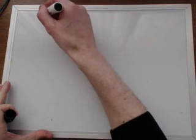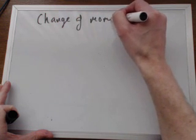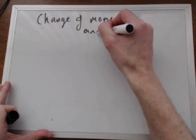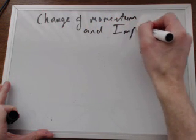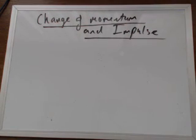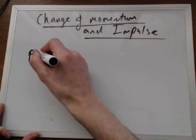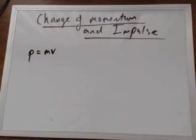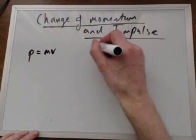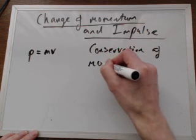Hello. In this video, we will look at change of momentum and impulse. First of all, let's talk about momentum. The symbol for momentum is p, and momentum equals mass times velocity. Now, the momentum of a closed system is conserved, and that's known as the conservation of momentum.